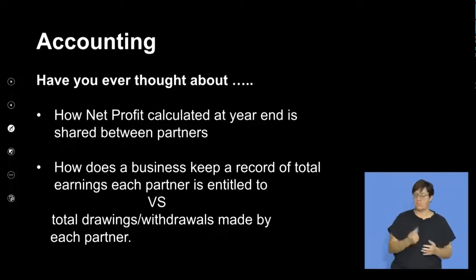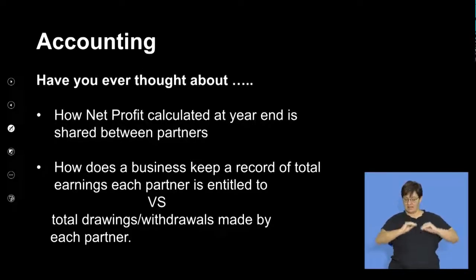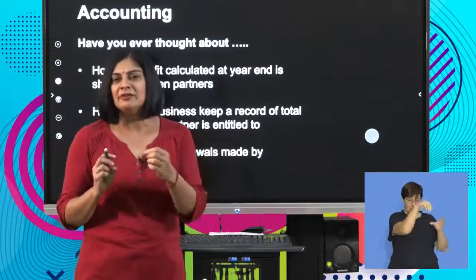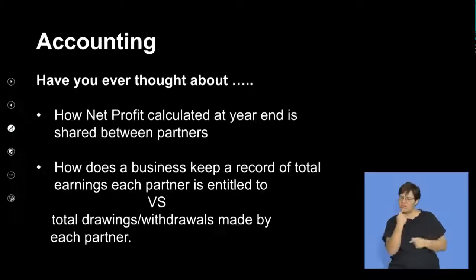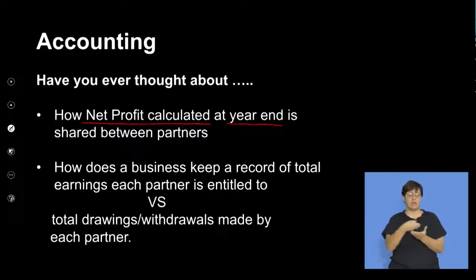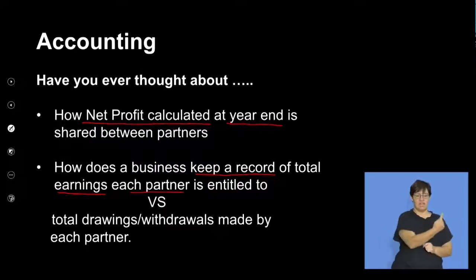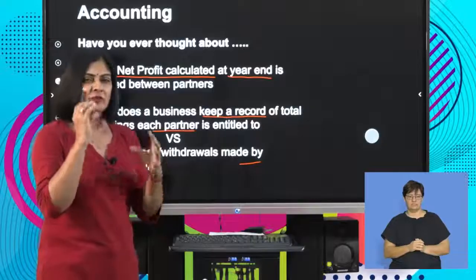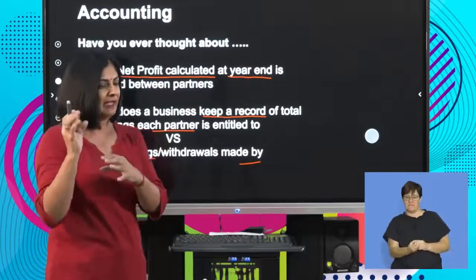Being the accountant of a sole trader versus being an accountant of a partnership makes you wonder and ask certain questions. Some of those questions could be: how is net profit calculated at year end and how is that net profit shared between your partners? How does a business keep a record of total earnings for each partner, or what each partner is entitled to versus the total drawings made by partners?